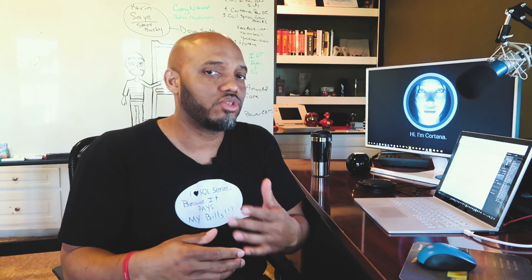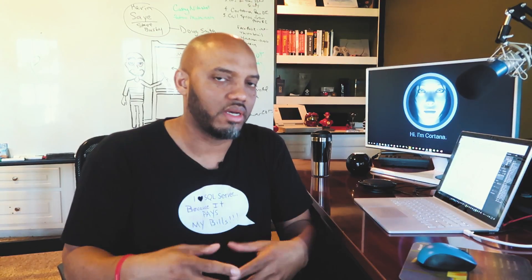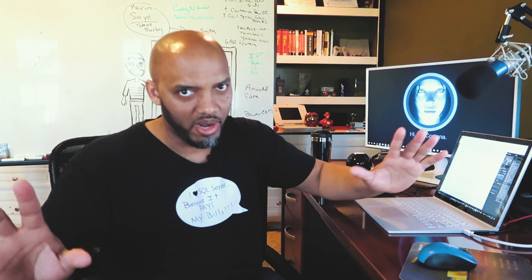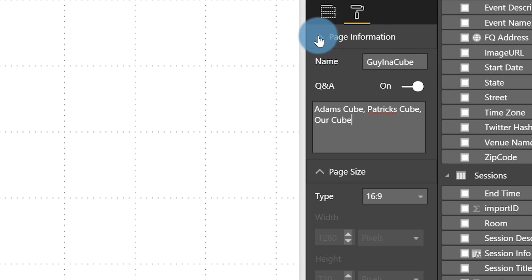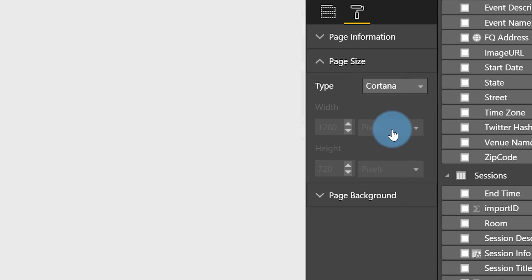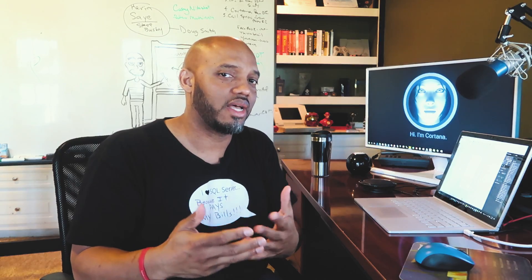These are other names that you can use when asking Cortana — say 'Cortana, Patrick's Cube' or 'Adam's Cube,' and it should open the Power BI card. The next thing you want to do is set up your Cortana card. Click on Page Size, expand Page Size, and change the type to Cortana. You've essentially created your Cortana slide.